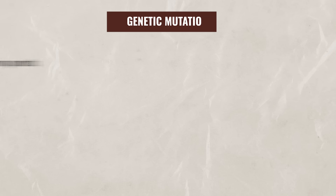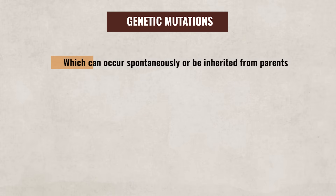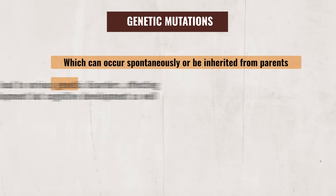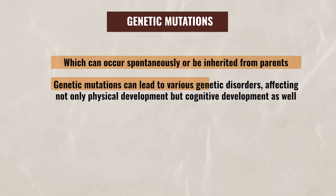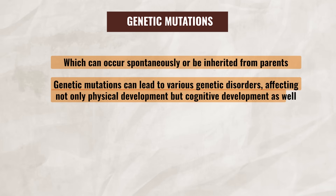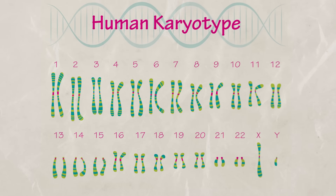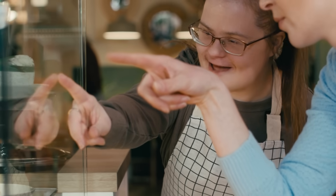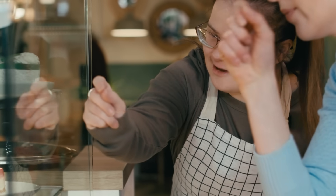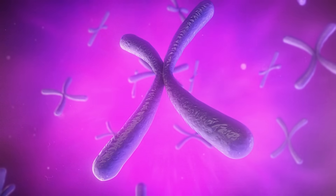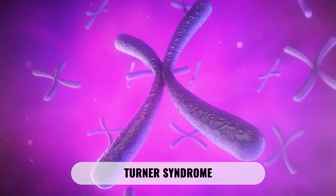Now, there's also a chance of genetic mutations, which can occur spontaneously or be inherited from parents. Genetic mutations can lead to various genetic disorders, affecting not only physical development but cognitive development as well. For instance, if there is an extra copy of chromosome 21, it will result in Down syndrome. Or if a female is missing or has an incomplete X chromosome, it will result in Turner syndrome.